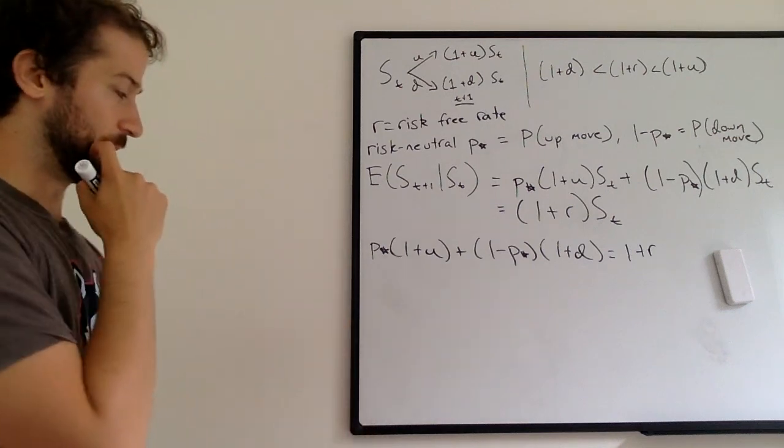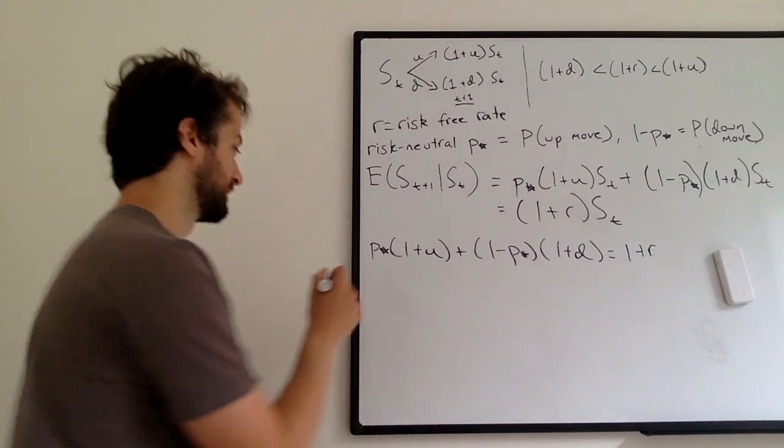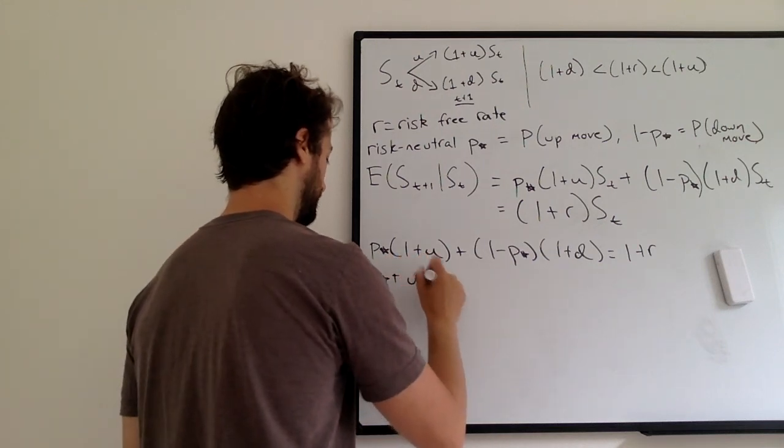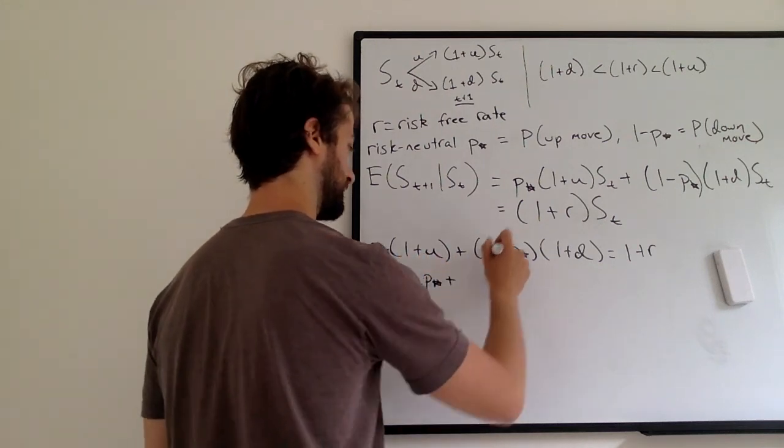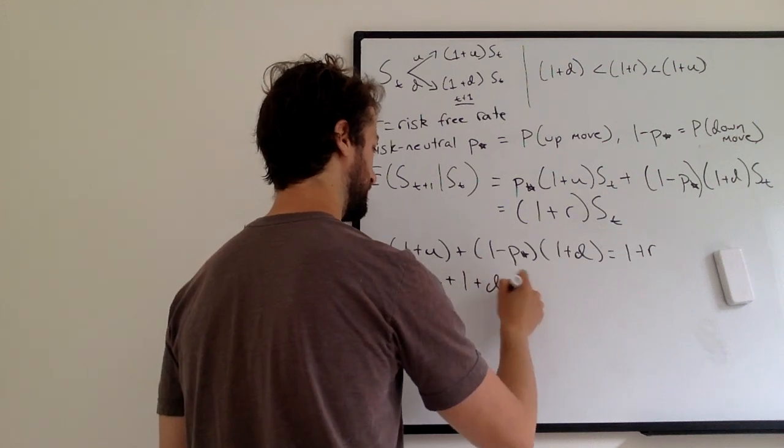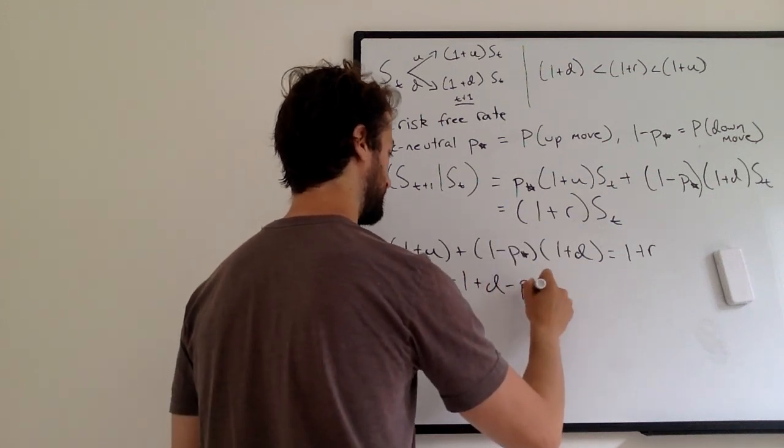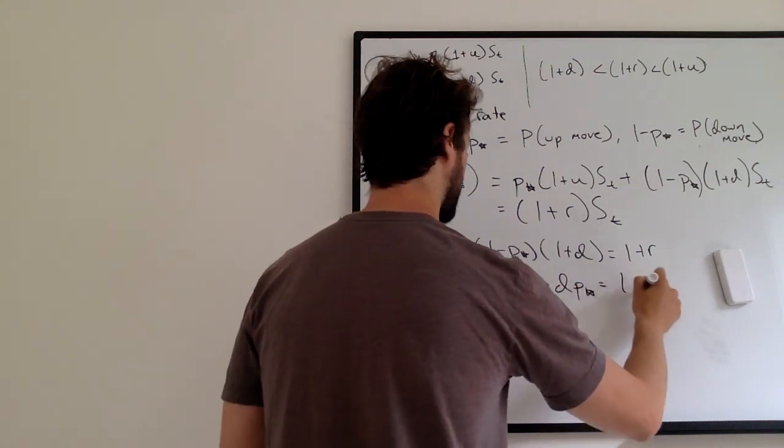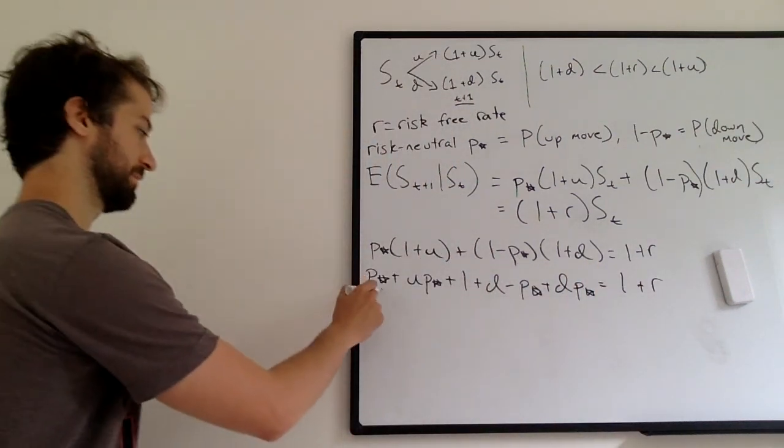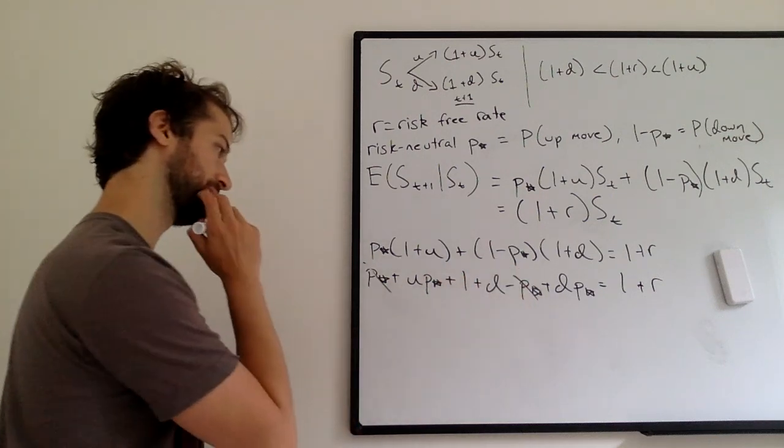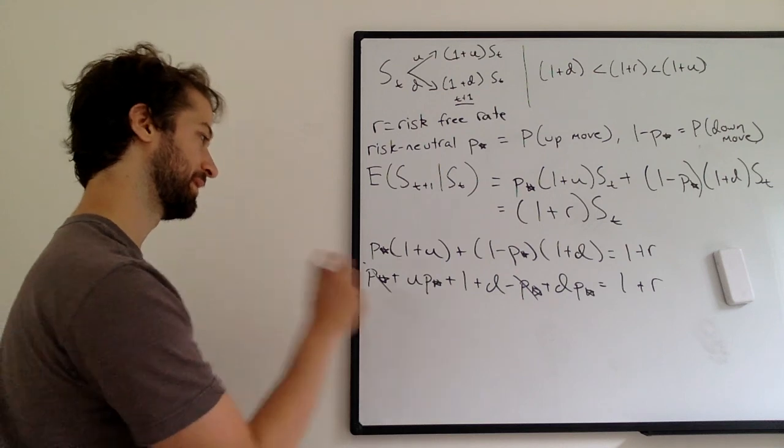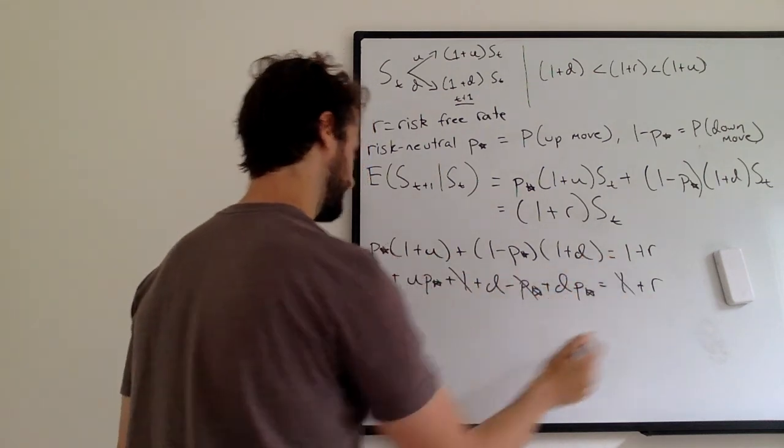plus one plus R. Let's expand our terms. So P star plus U P star plus one plus D minus P star plus D P star plus one plus R. Okay, so I have a P plus P star minus P star. That goes away. Does anything else go away? I have a one on this side and a one on this side. That goes away.